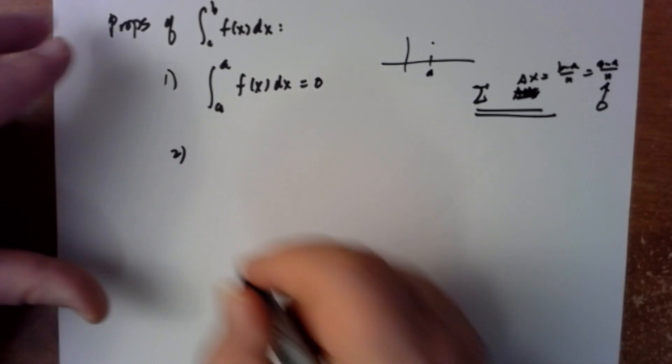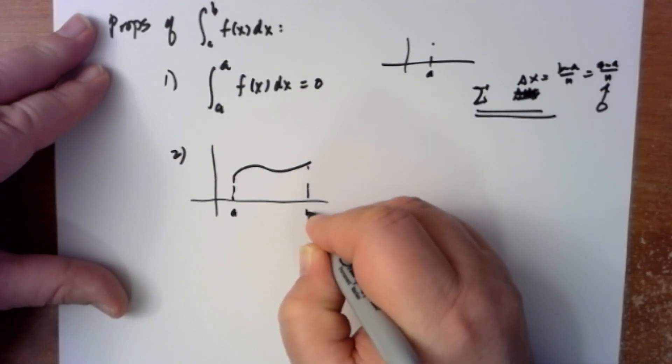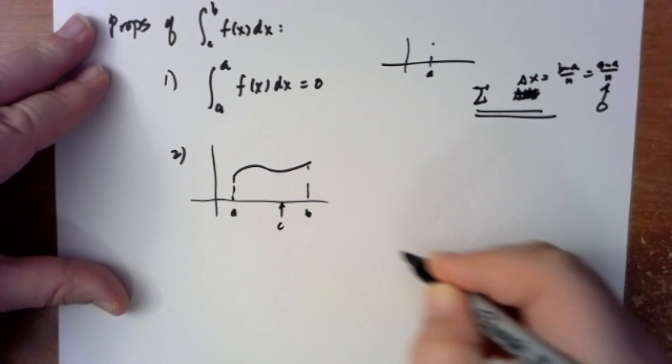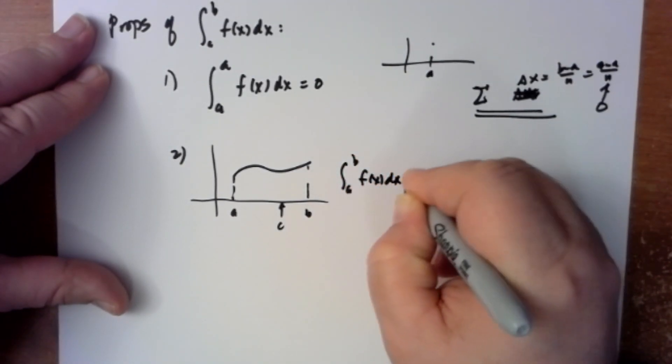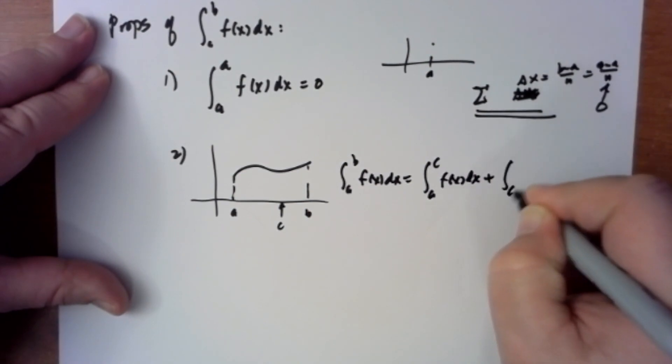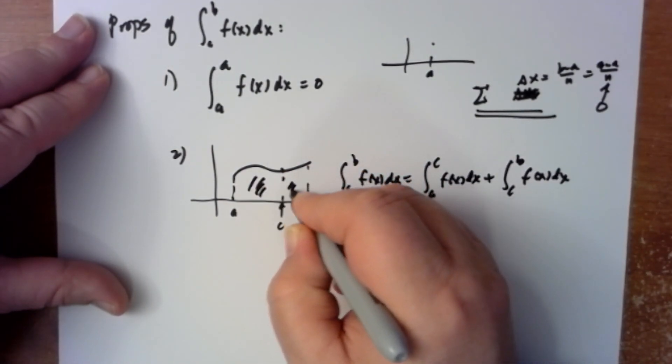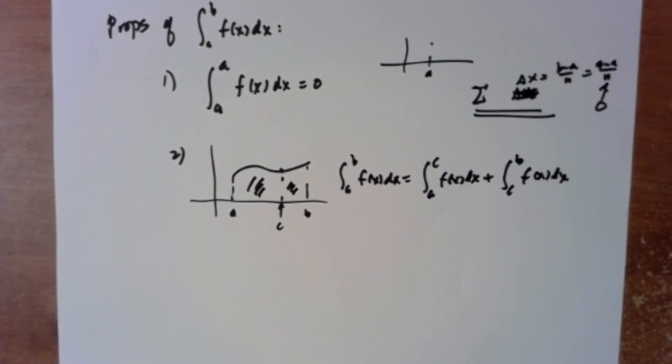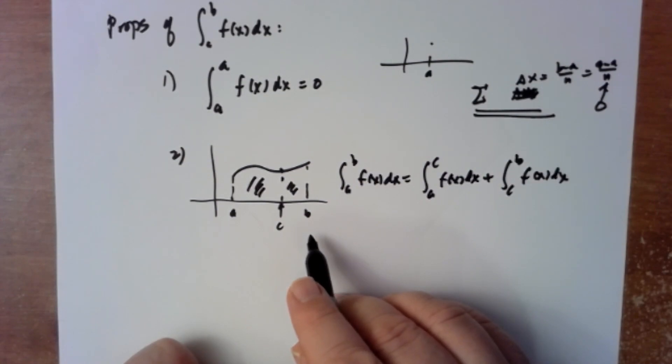Property two: you can break up an integral. So if you have a function from a to b, and you can pick any value of c in the interval, maybe c is there, then you can break up your computation so that the integral from a to b of f(x) dx is equal to the integral from a to c of f(x) dx plus the integral from c to b of f(x) dx. So you can break up the area into this piece and this piece. It actually works for any c - c doesn't have to be inside the interval, but it's probably easier to imagine why you would break it up if c is actually inside the interval.